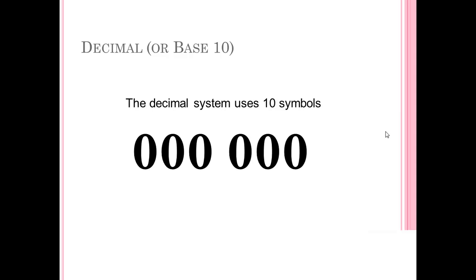The decimal system uses 10 symbols. You can see here I have zeros and we begin to count. We have all the symbols 0 through 9. We have 10 symbols but remember 0 is the first symbol.